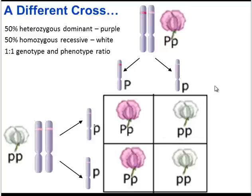Those are some important Mendelian ratios. It's worth noting that most human traits are not quite this simple — it's not as easy as just one dominant gene and one recessive gene. But it's important to know these basic patterns so that you can then predict more complex patterns, which we'll look at in class.